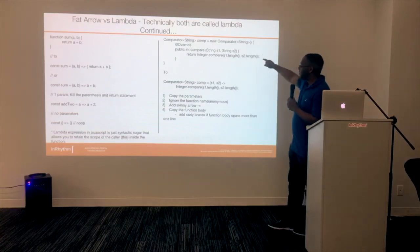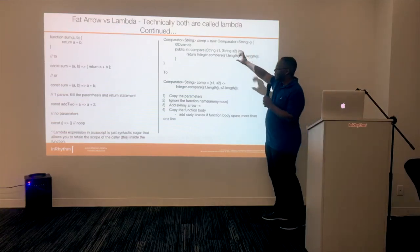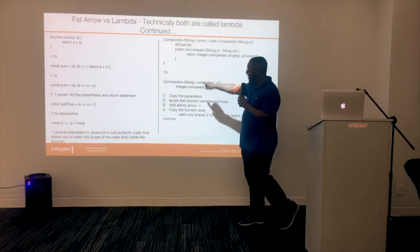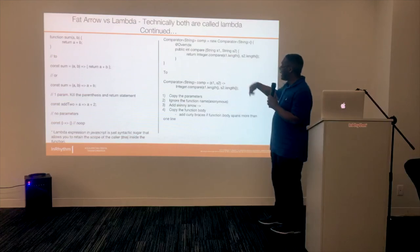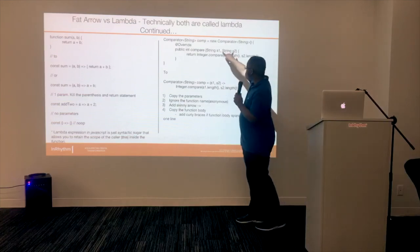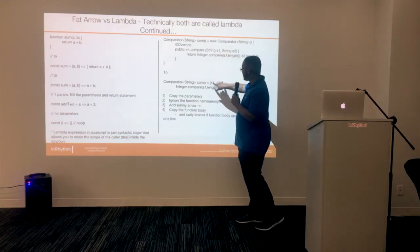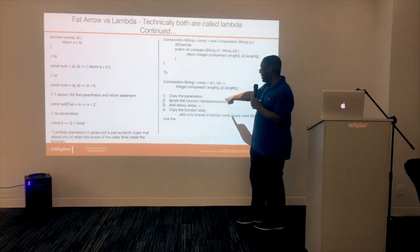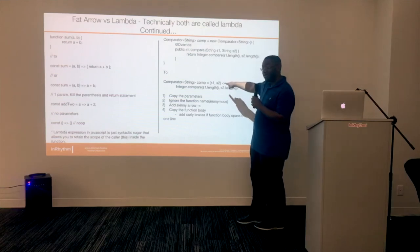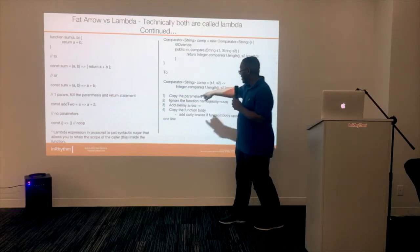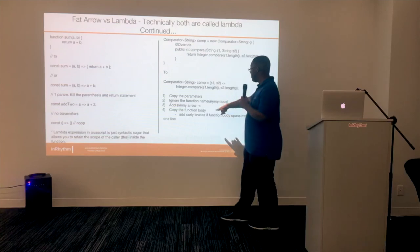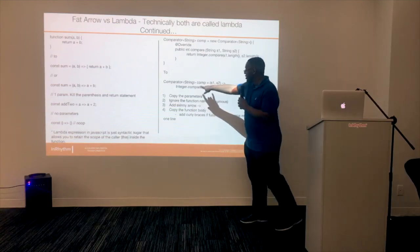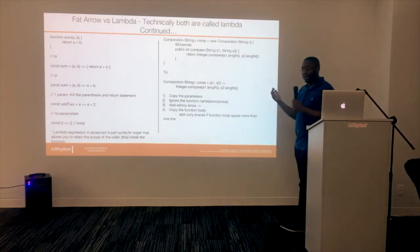For the lambda function in Java, this is the old version 1.7 and before equivalent. The steps to make it a lambda expression: copy the parameters and remove the type declaration, ignore the function name since it's anonymous, use a single hyphen with a greater-than sign (->), then copy the body and remove the return keyword. The result is Integer.compare as the lambda. That's how you create a lambda function in Java.